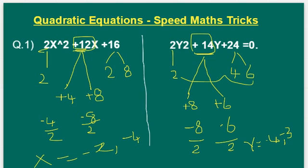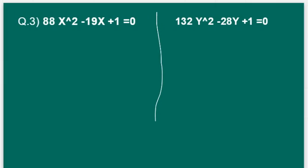Therefore, we conclude that x = −2, −4 and y = −4, −3. Comparing the values, x is greater than or equal to y.